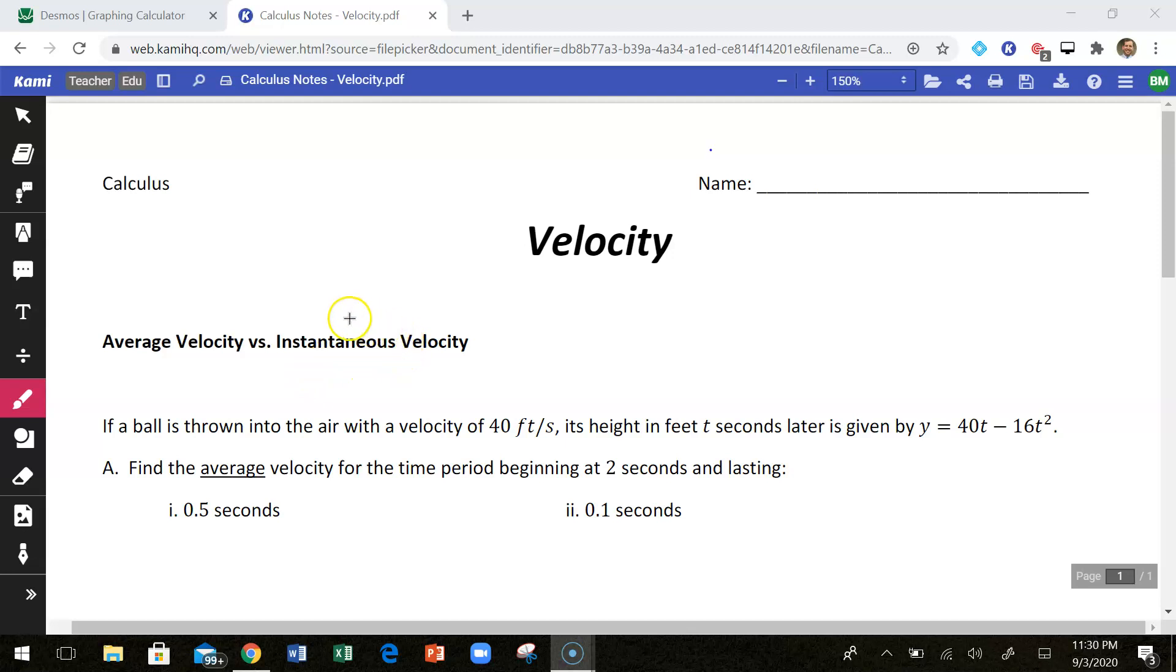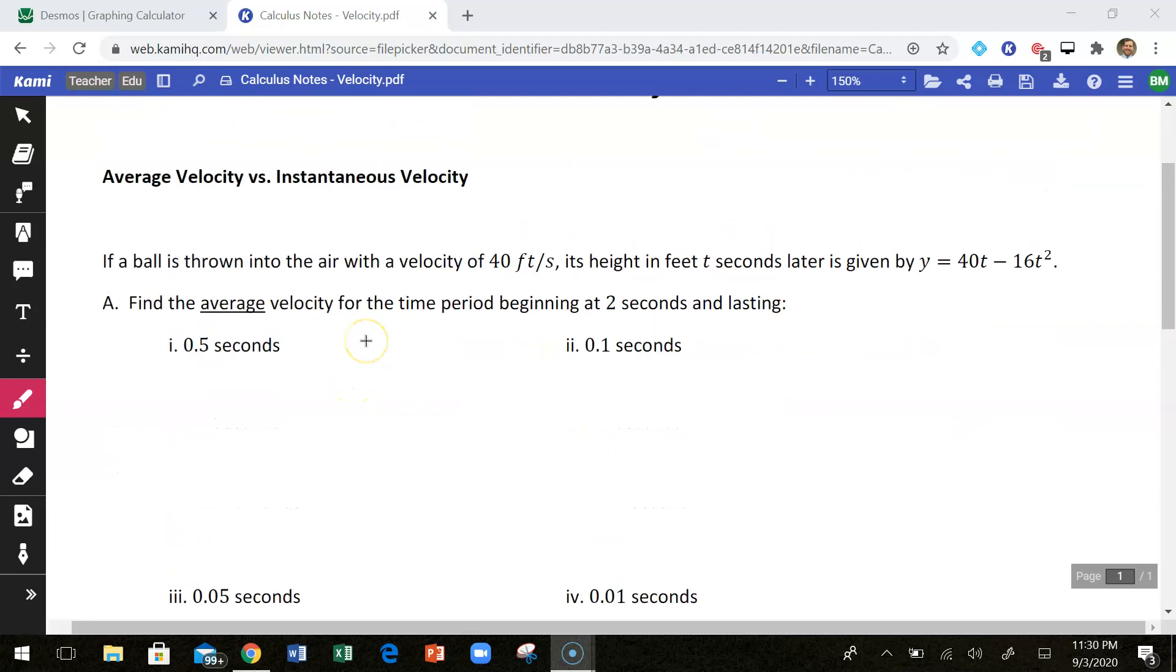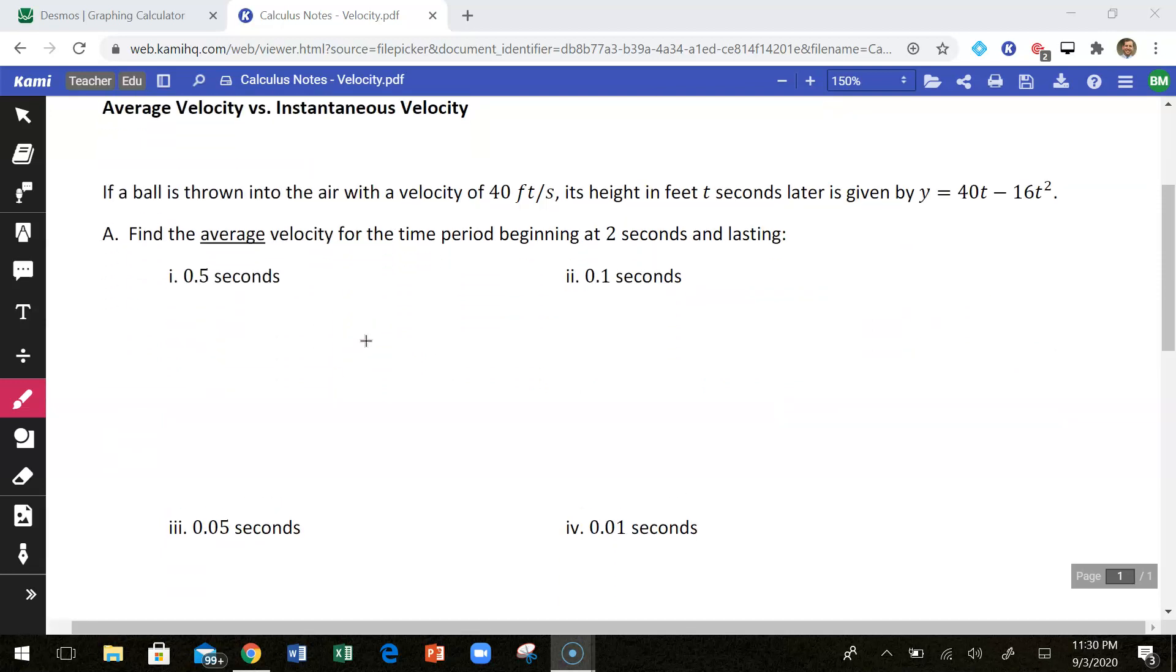So how does our car do that at one instance? We're going to look at an example here where we're going to try to figure that out, where we can just say, okay, I know that the instantaneous velocity at this specific time is going to be this.